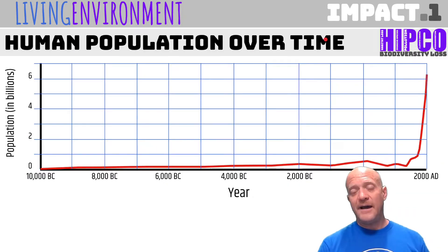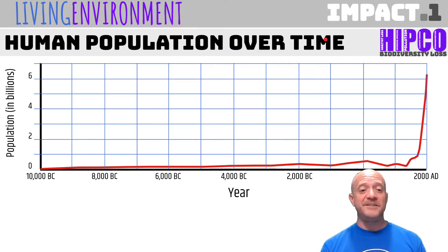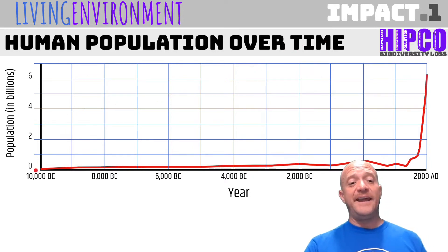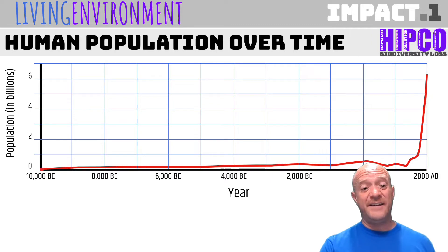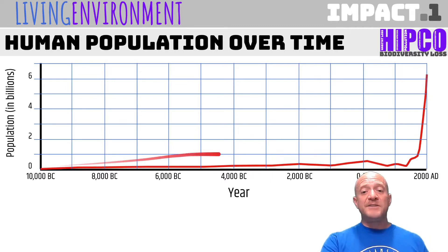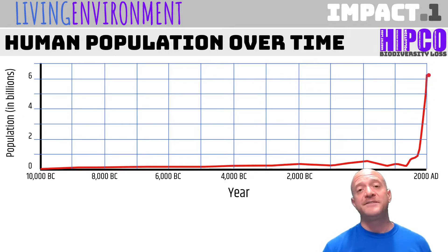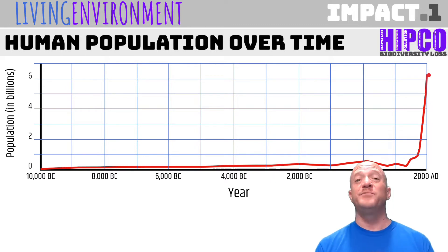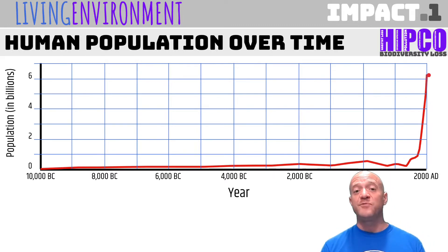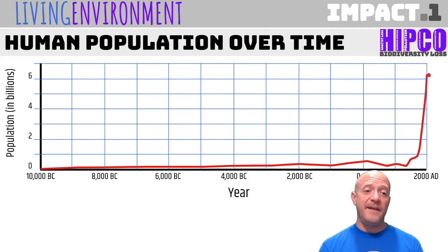Today we're talking about invasive species, but looking at the human population over time, the human population has been very steady since the domestication of plants and producing agricultural crops. For the last 10,000 years it was pretty steady, then slowly crept up, especially since the Industrial Revolution. That enabled us to explore the world and produce much more food. Technology has really increased the population and transportation, enabling the population to exponentially increase.